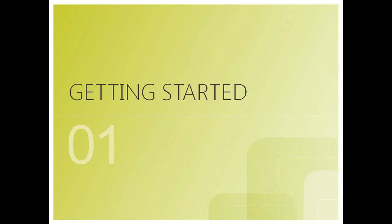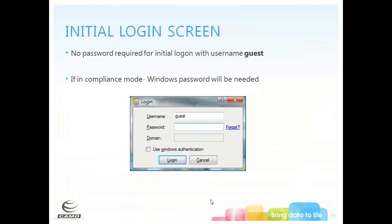The initial login screen when you install the Unscrambler X has a default username of guest, which does not require a password. In the Unscrambler 10.2, it can be installed in compliance mode, in which case your Windows password will be needed. Once logged in, you can change your password and username, which will then be associated with the audit trail carried with your projects.